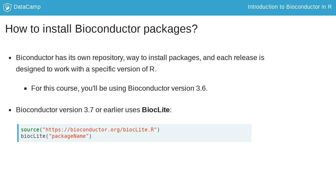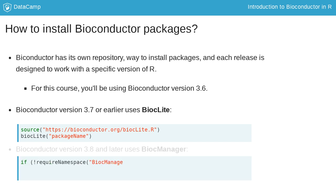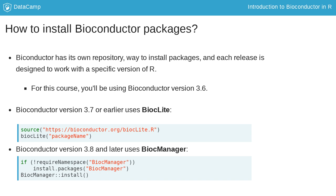Once you source the biocLite, you will be informed if any new versions of Bioconductor are available, and will also be shown a prompt to update your R version if needed. Updating packages regularly is important to get the new features. In case there are upgrades on packages or dependencies, you will be asked to update all, some, or none of the packages.